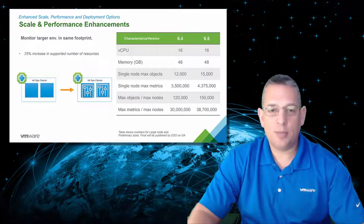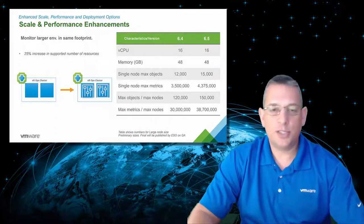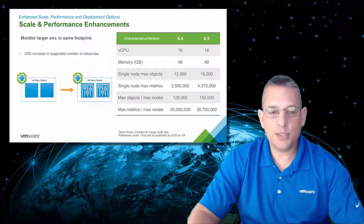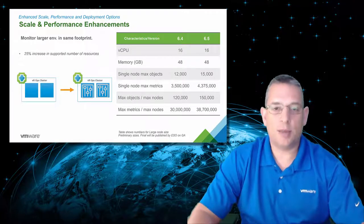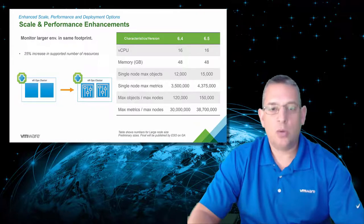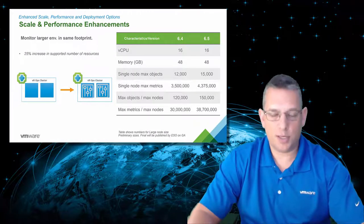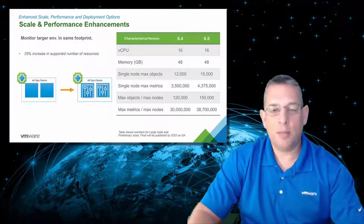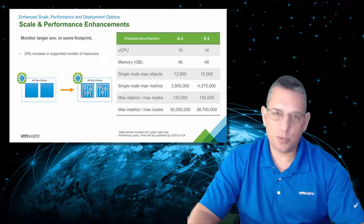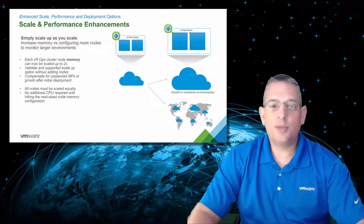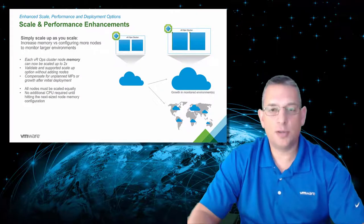The second item is we have made scale and performance enhancements, which allow you to monitor larger environments with the same size footprint as older versions. For example, with the large deployment profile of vRealize Operations, you could monitor perhaps 20,000 objects before. Now, with that same size profile, you can do 30,000 or 40,000 objects — essentially a 25% increase in the supported number of resources.